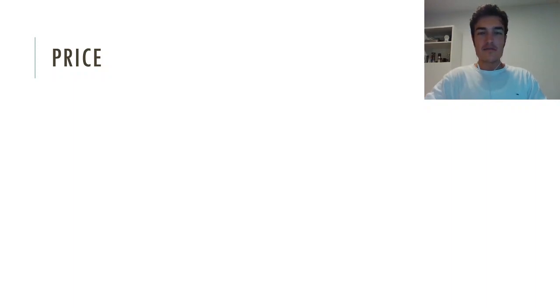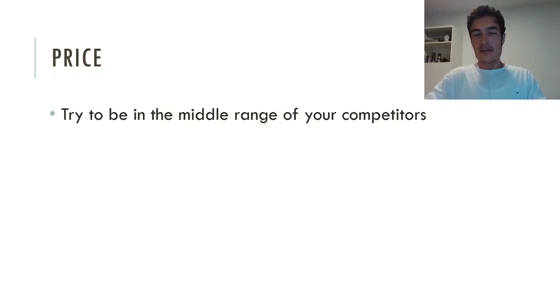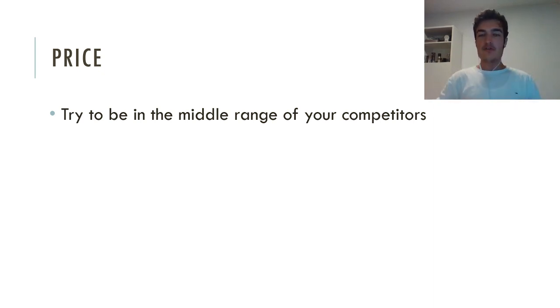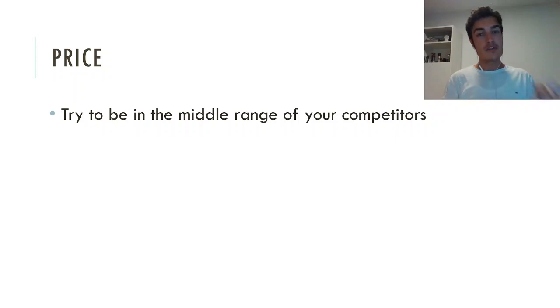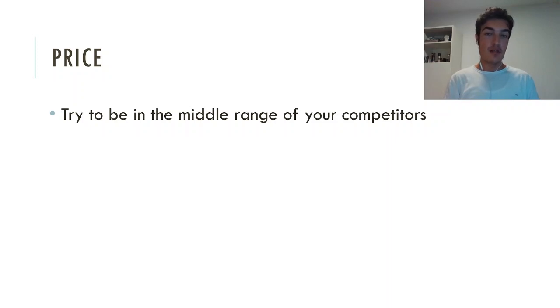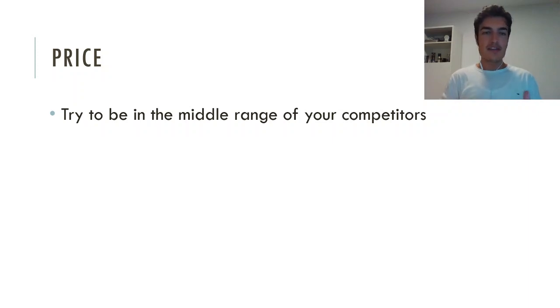Then we have the price. As a rule of thumb, especially as a dropshipper or small e-commerce business owner, try to be in the middle range of your competitors. When you look at competitors selling almost the exact same product, try to be somewhere in the middle range. When you're at the very low end, it will be very hard to be profitable when CPCs are high. When you're at the very high end, chances are you don't get sales. I also did another video on pricing for Google Shopping ads which you can check out.